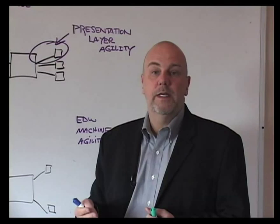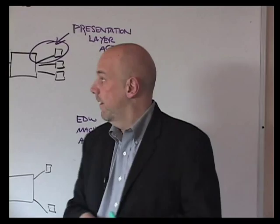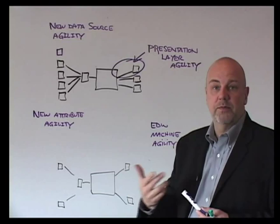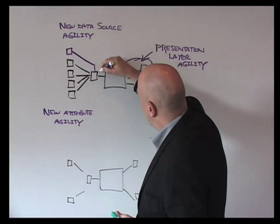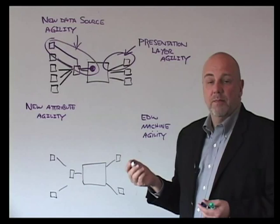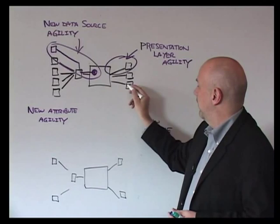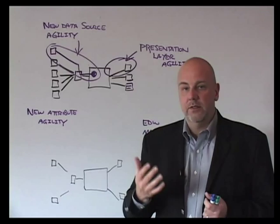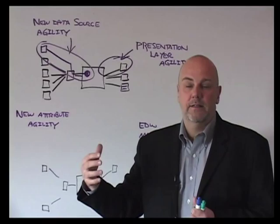New data source agility means a new data source has come in that is within scope of what we're already working with. I'm concerned with how I get this new data source represented in the warehouse, and to whatever extent possible, also represented in existing marts. For example, if I'm running sales for four different stores and a new business unit establishes a fifth store and that data starts coming in, how fast can I take that data and load it through the warehouse? That's new data source agility.